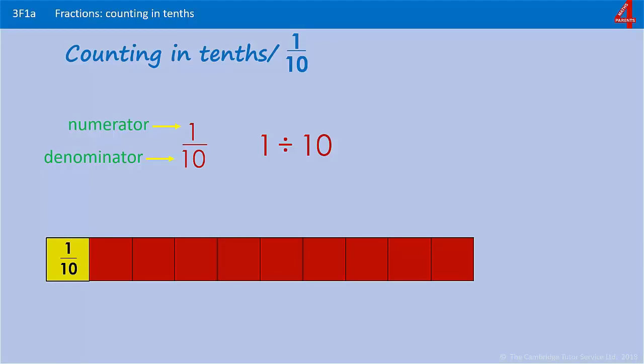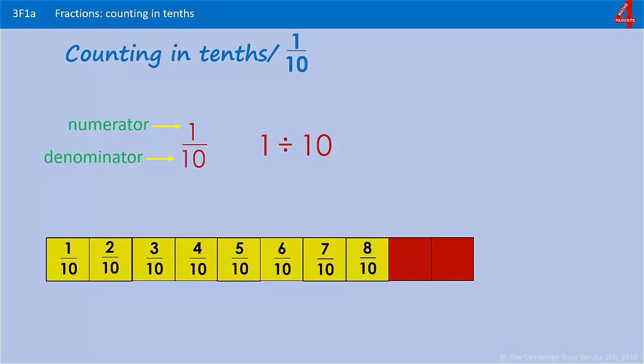We need ten of those yellow cards to fill up the red card. So each time we add on a tenth, you'll see that the denominator stays the same, but we're adding one to the numerator each time: four tenths, five tenths, which you'll probably recognize is a half of the whole piece of card. And we carry on: six tenths, seven, eight, nine, and then the final tenth that we put in has covered the whole piece of card. Ten tenths is the same as one whole.